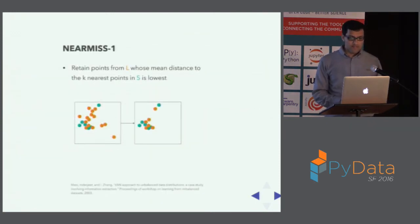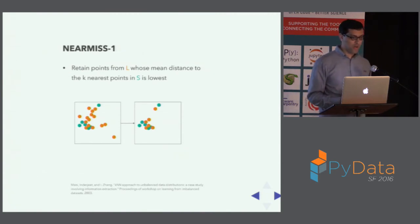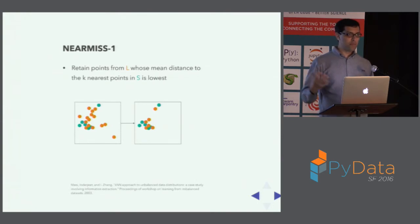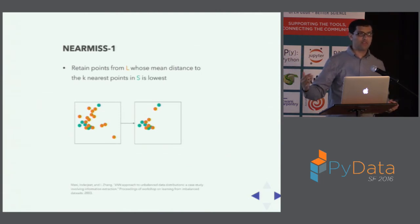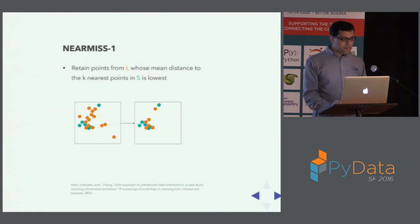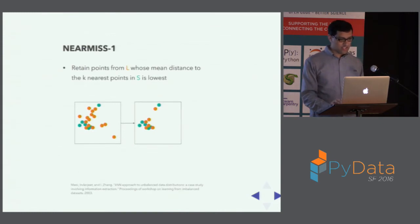A more sophisticated family of techniques is Near Miss, based on nearest-neighbor arguments. Near Miss 1 retains points from the majority class whose mean distance to K nearest points in the minority class is lowest — essentially retaining points close to the boundary between the two classes. For a dataset like ours where the clusters are fairly distinct, this approach doesn't perform well.